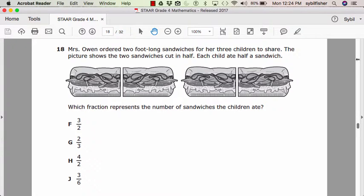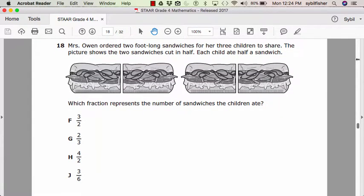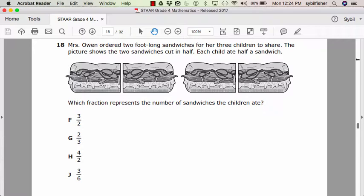F, three over two. G, two over three, or two-thirds. H, four over two. Or J, three over six.